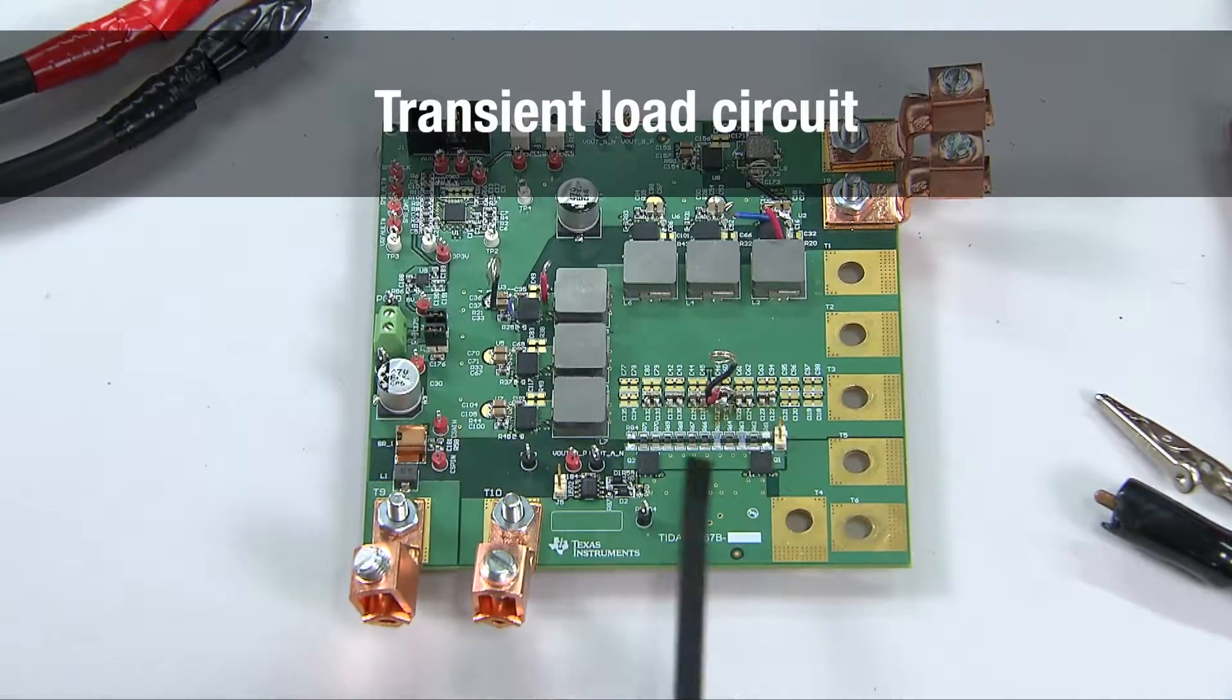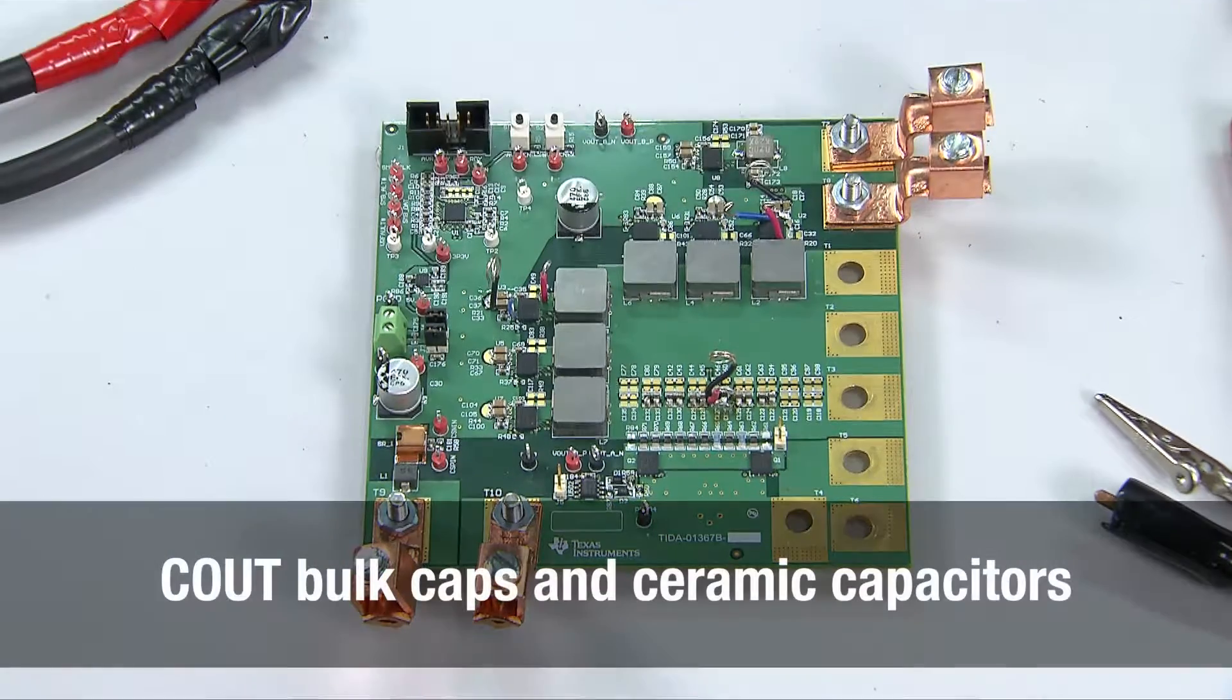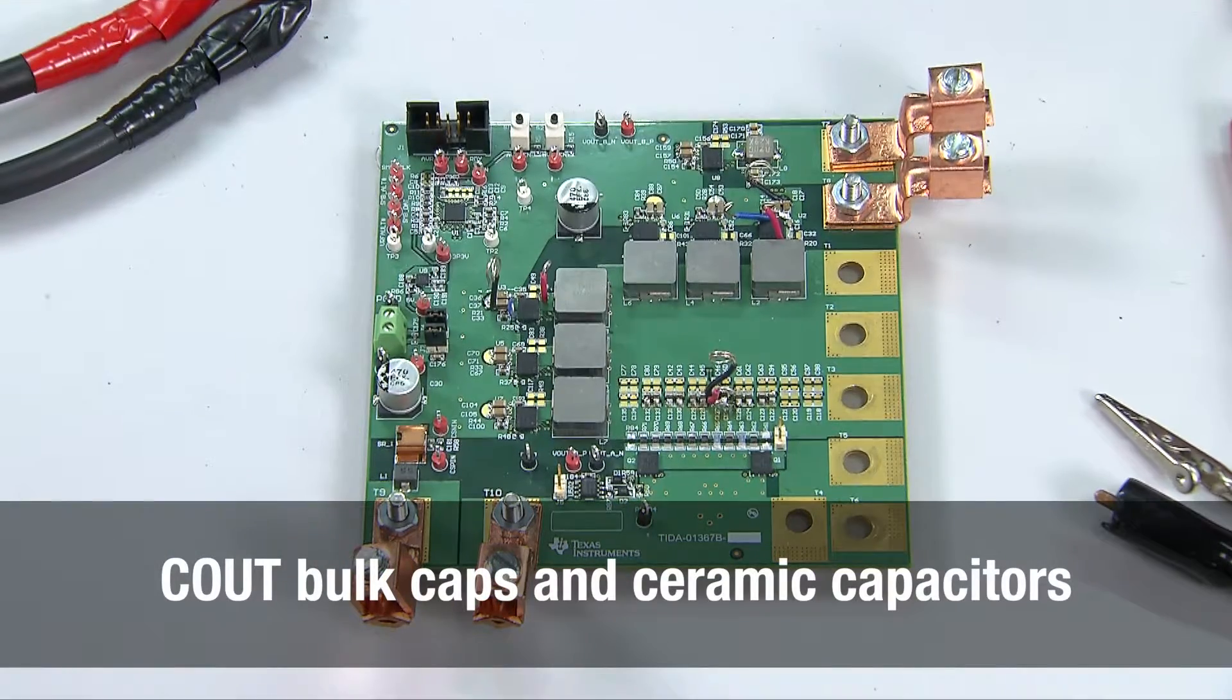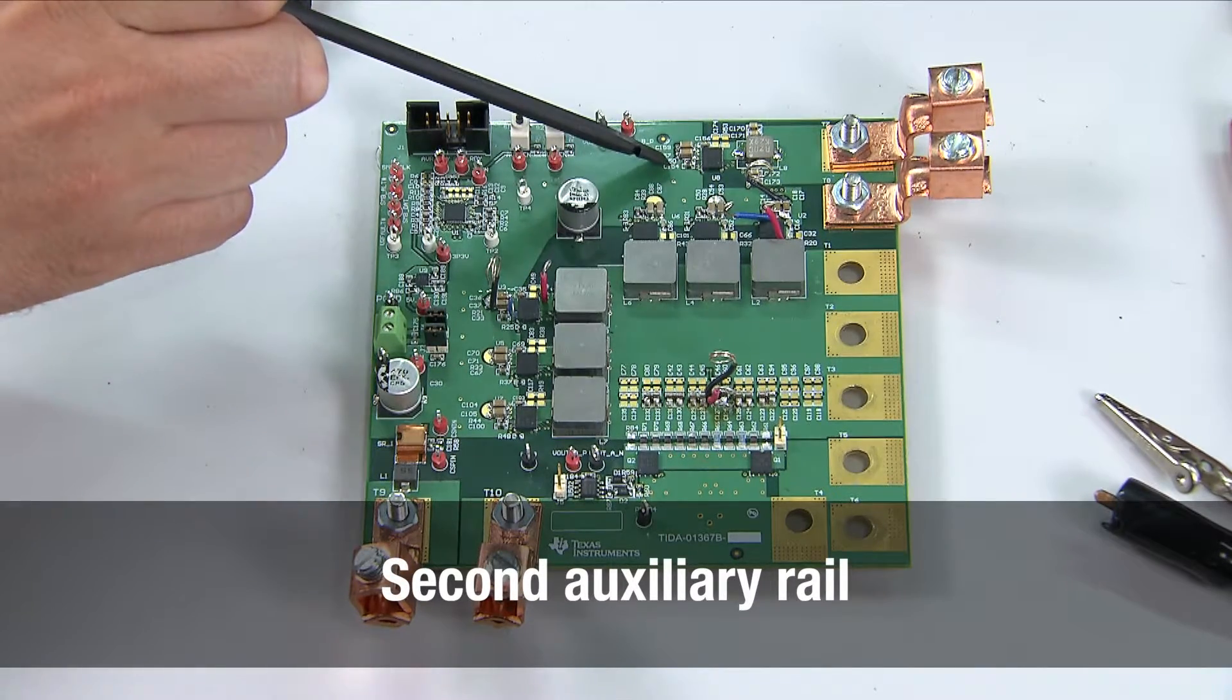Our 12 volt input is coming in from the bottom left. A transient load circuit is also located on the board and it's set up to provide the 150 amp step we designed for in the previous video. The C-out bulk caps and the rest of the ceramic capacitors are located on the bottom of the board.